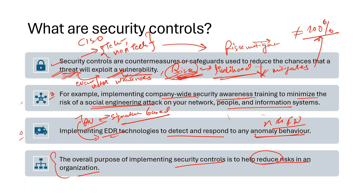I want to emphasize the word 'reduce' because risk can never be eliminated. Never use the word 'eliminate' — saying we are reducing the risk to 100% can never happen. We always say we are reducing the risk and bringing it back to an acceptable level. That's something we'll discuss in much more detail in the risk assessment session. Always use 'reduce' or 'mitigate,' not '100% reduction in risk.'